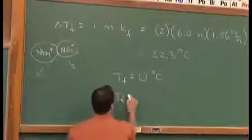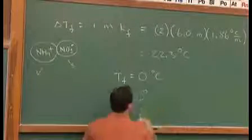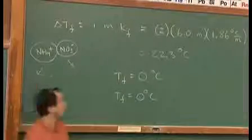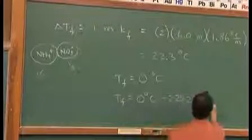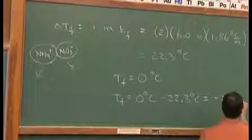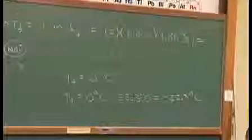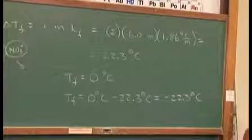So our new freezing point is going to be zero degrees C for the water, minus 22.3 degrees C. So certainly the mathematics is simple. And the freezing point of our new 6 molal ammonium nitrate solution is negative 22.3.